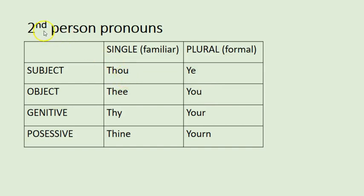A quick review of the second person pronoun system: at the beginning of the early modern English period we have 'thou likest cheese' and 'ye like cheese'; 'I like thee' and 'I like you'; 'this is thy horse' and 'this is your horse' for the plural; 'is this horse thine?' and 'I think this horse is yourn.' 'Yourn' isn't widely attested everywhere but it did exist. If you've ever heard an old-time Ozarks person refer to something as 'hisn,' that's the same Elizabethan early modern form of the possessive.